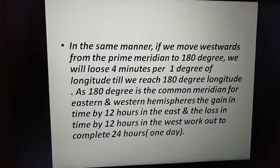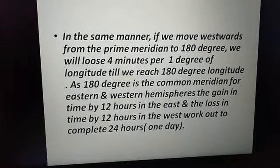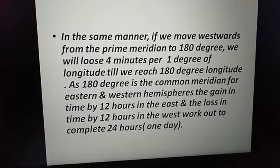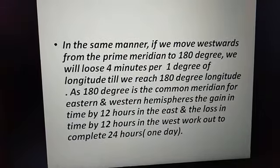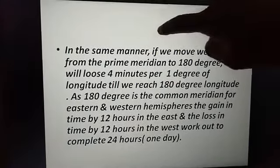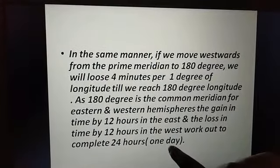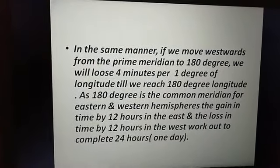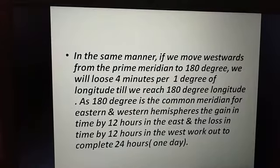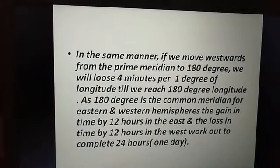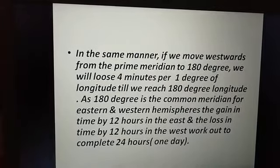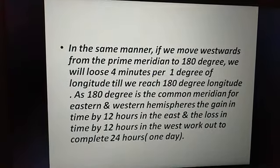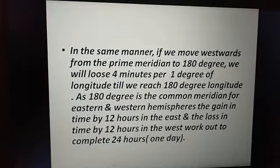In the same manner, if we move westwards from the prime meridian to 180 degrees, we will lose 4 minutes per 1 degree of longitude till we reach the 180 degree longitude. When we move east from zero degrees we are 12 hours ahead, but when we move west from zero degrees, we fall 12 hours behind — because for each degree we lose 4 minutes.